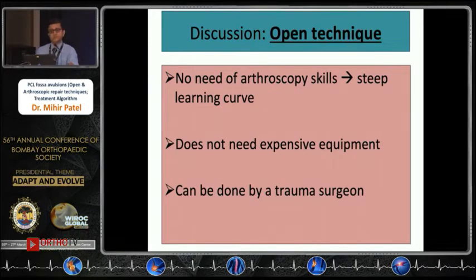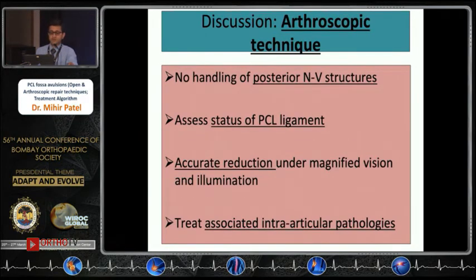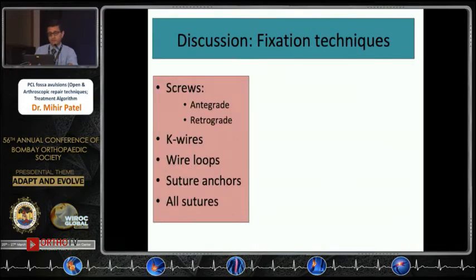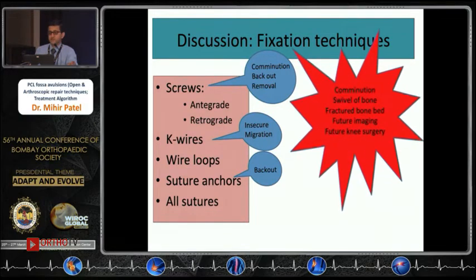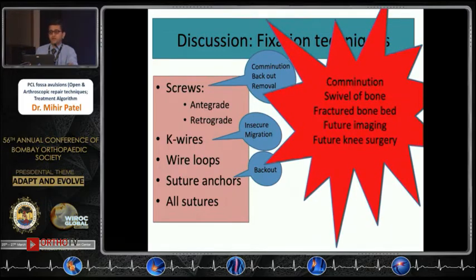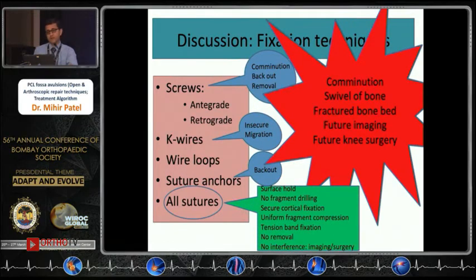The open technique has advantages: it does not require arthroscopy skills — which have a steep learning curve — does not need expensive equipment, and can be performed by a trauma surgeon. The arthroscopic technique has advantages of not handling neurovascular structures, allowing assessment of PCL ligament status, addressing all intra-articular pathology, and providing magnified visualization with good illumination. Fixation options include screws, K-wires, and suture anchors; however, the problem with screws is that if the fragment is comminuted, they can back out — the PCL fragment is usually comminuted, metal can affect future imaging and knee surgery.